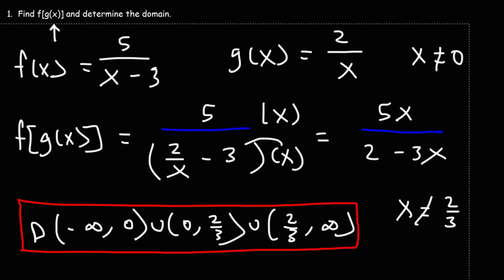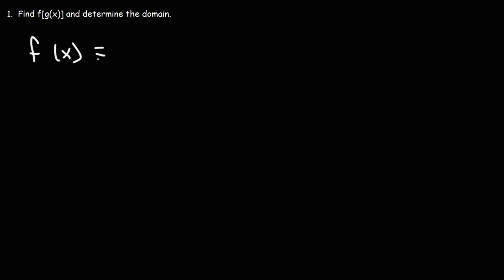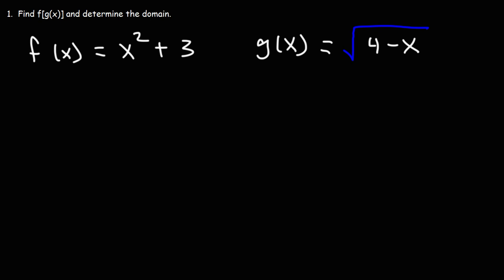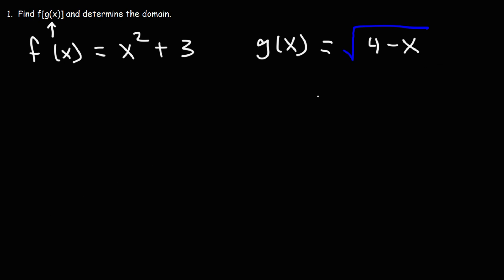Let's work on one more problem. Let's say f of x equals x squared plus 3 and g of x equals the square root of 4 minus x. Go ahead and determine the domain of the composite function f of g of x. Let's start with the inside function g of x, because the values of x that restrict g will also restrict the composite function.